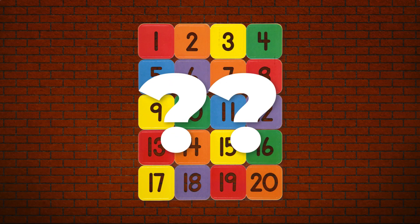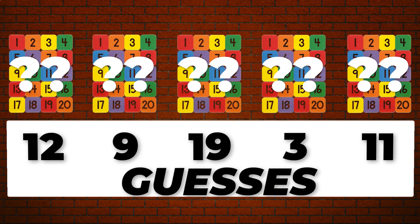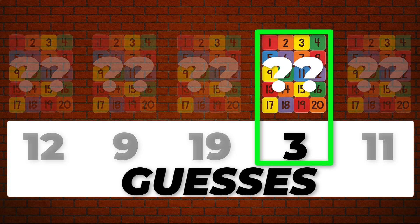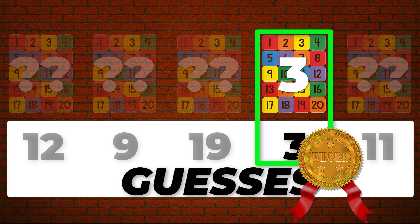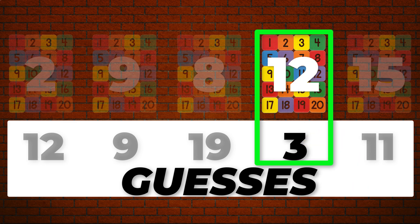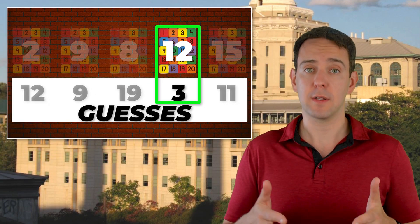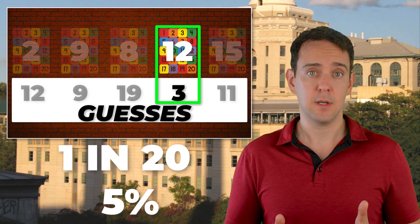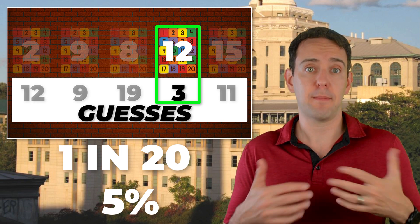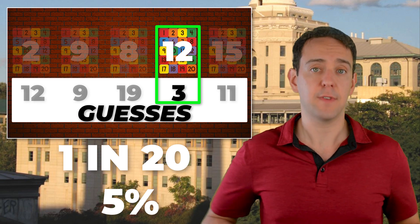To help us understand why the consultant's behavior is so problematic, let's imagine a game where there is a secret number between 1 and 20, and I have to guess it — and let's play five rounds of that game. The rules are simple: before the secret numbers are revealed, I have to pick one of my guesses to count. It won't matter if I get the other ones right — all that matters is the one I pick. If I get that one right, I win. If I get different ones right but my chosen round is wrong, tough luck. The odds of winning this game are exactly 1 in 20, or 5%.